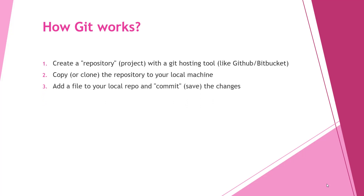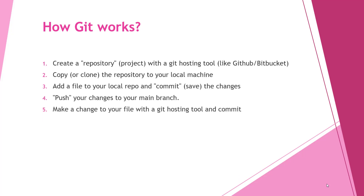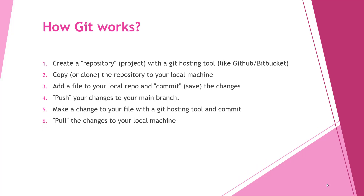You add a file to your local repo and commit the changes — commit is nothing but saving the changes. Then you push your changes to your main branch on the Git hosting tool. If someone else changes the code on that branch, you need to get the latest code, which is called a pull.